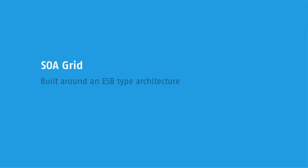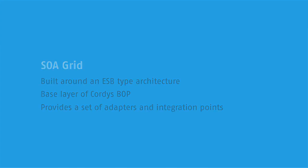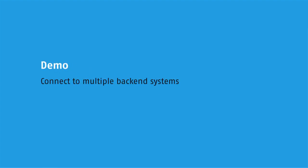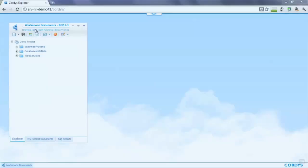In this demonstration we're going to talk about the Cordis SOA grid and integration layer, which forms the underpinning of the Cordis business operations platform. The Cordis SOA grid is an integration capability built around an enterprise service bus type architecture, providing a set of adapters and integration points into various back-end systems and externally to web services. We'll show how to connect to multiple back-end systems and link these through a business process to orchestrate features and functions into a single orchestrated process.